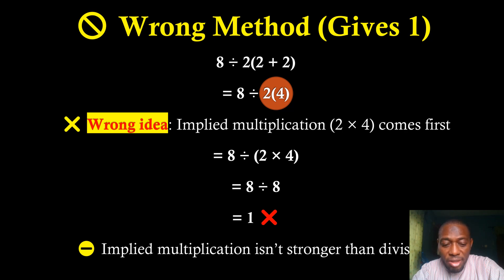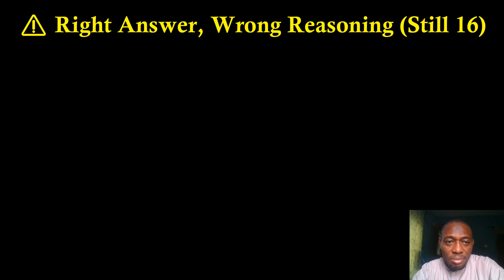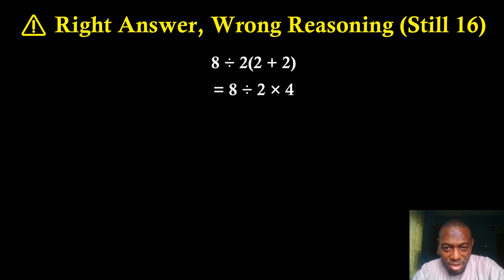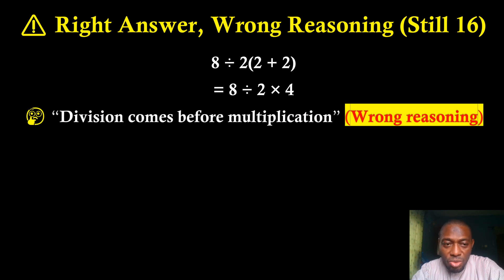Now let's look at the right answer but with wrong reasoning. After solving the bracket, 2 plus 2 gives us 4. It is wrong to think that you have to do division first before multiplication — that is the wrong way of thinking about solving this problem.